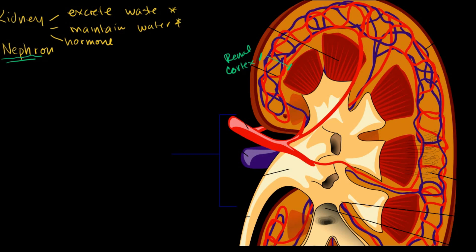And then this area right here is the renal medulla. Medulla comes from 'middle,' so you can almost view it as the middle of the kidney — the renal medulla. Besides just understanding these words, we're going to see that they actually play a very important role in this actual filtration, or this excretion of waste, and this ability to not dump too much water when we're trying to filter throughout our blood.